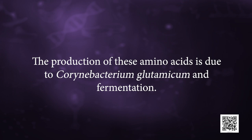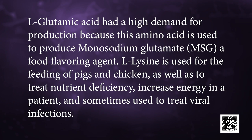Now we will discuss the synthesis of amino acids by using microbes. The synthesis of essential amino acids such as L-methionine, L-lysine, L-tryptophan and the non-essential amino acid L-glutamic acid are used today mainly for feed, food and pharmaceutical industries. The production of these amino acids is due to Corynebacterium glutamicum and fermentation. L-glutamic acid had a high demand because this amino acid is used to produce monosodium glutamate, known as MSG, a food flavoring agent. L-lysine is used for the feeding of pigs and chicken, as well as to treat nutrient deficiency, increase energy in patients, and sometimes to treat viral infections.